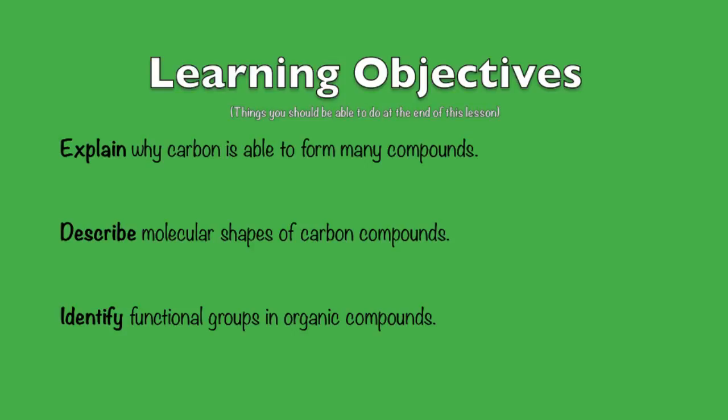Now you should be able to achieve all our learning objectives. Carbon is able to form many compounds because it can form four covalent bonds due to its four valence electrons. The molecular shapes of carbon compounds include tetrahedral (four sides, like a pyramid), planar (all atoms in the same plane, like on a sheet of paper), and linear (all elements in a straight line). You should also be able to identify the functional groups in organic compounds: the amino group, the hydroxyl group, and the carboxyl group.